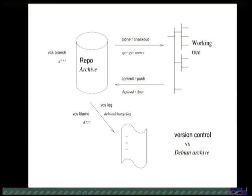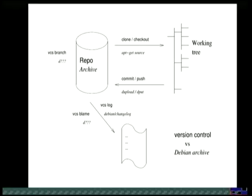The Debian Archive is, amongst other things, a version control system. You can clone things by doing apt-get source, or checkout if you're a bit retro. And when you upload, that's like doing a commit or a push or maybe both together. But the Archive is actually quite a bad version control system — it doesn't have sensible branching, its history browsing is terrible, and its interaction with other VCSs, while there are many tools written, is still pretty bad.